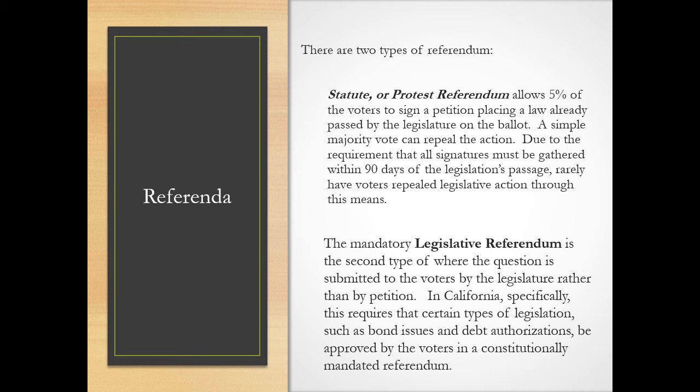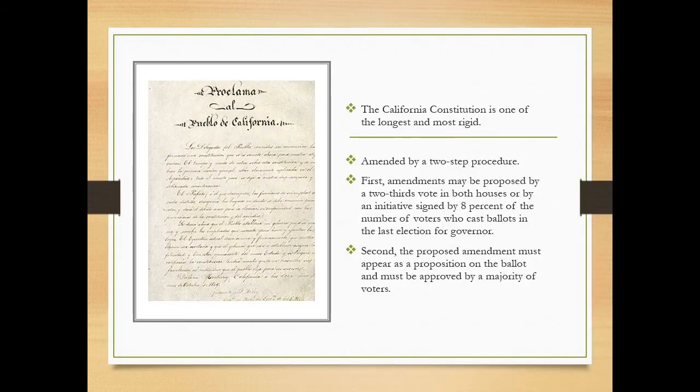For the referendum, voters are asked to judge an action previously taken by the state legislature. There are three main types of referenda: statute, constitutional, and mandatory. A statute referendum is proposed when an individual or group wishes to remove an element from the California code that was enacted by the legislature. The qualifying procedure is identical to that of the statute initiative, and if a majority of the voters approve the referendum, the statute is removed from the California code — this is a kind of the people's veto. The remaining two types of referenda are placed on the ballot by the legislature. A constitutional referendum is placed on the ballot by a two-thirds vote of each chamber — 27 in the senate and 54 in the assembly — and if a majority of voters approve, it becomes part of the California constitution.